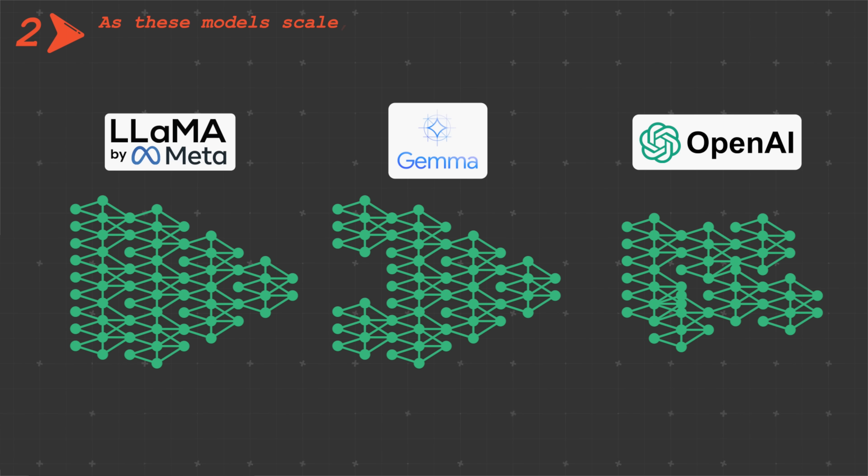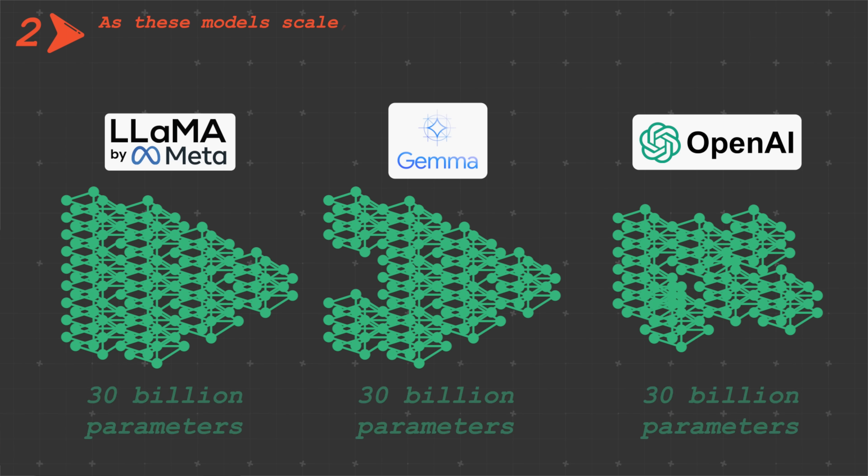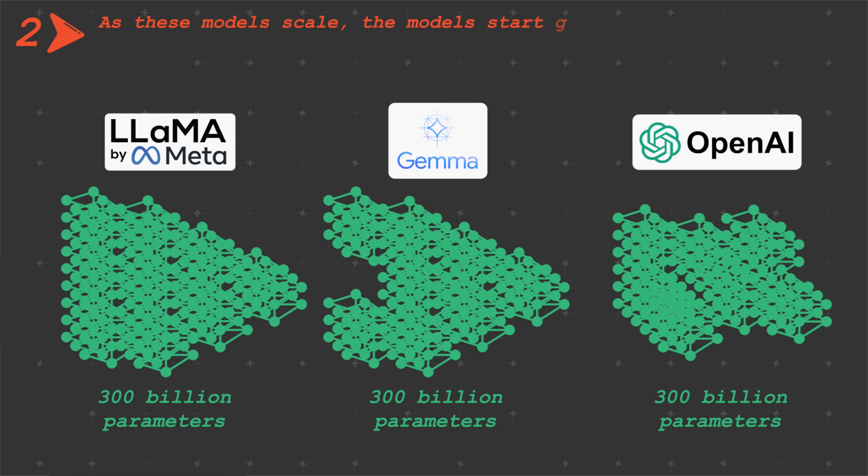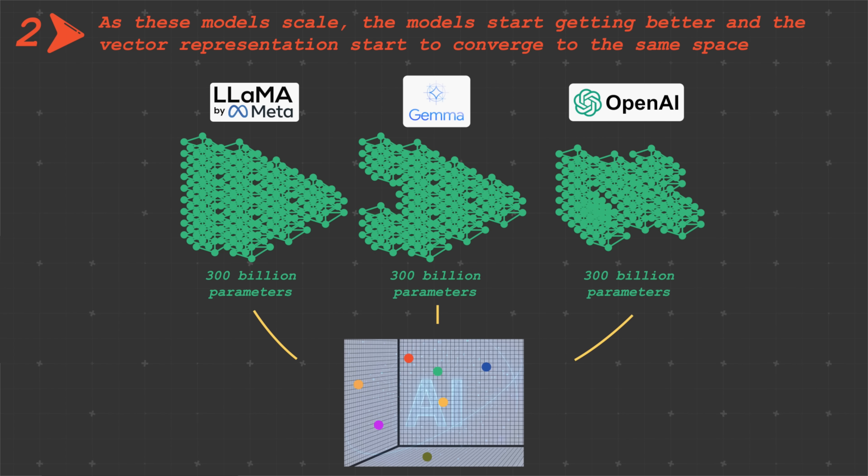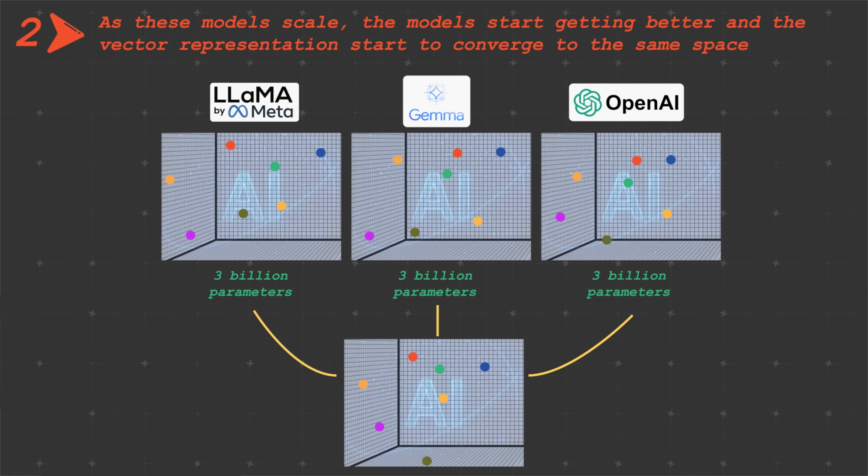Which brings us to our second point, which is most important. As these models scale, as you make these models from 3 billion parameters to 30 billion parameters, from 30 billion parameters to 300 billion parameters, the models get stronger and stronger, better at doing their jobs. And you know what? They all start to converge. The vector representations in these models start to converge to the same space, which means that as models get stronger, they are probably reflecting the real world or the actual information space that you want. But when they are weak, they might be differing from each other.